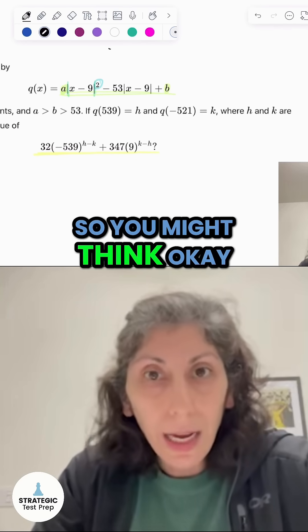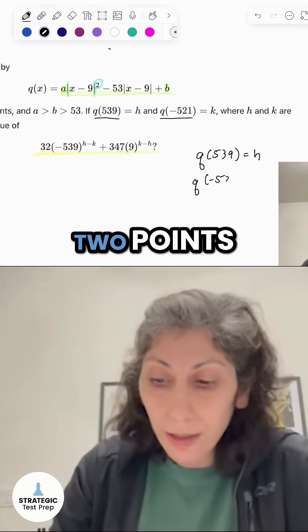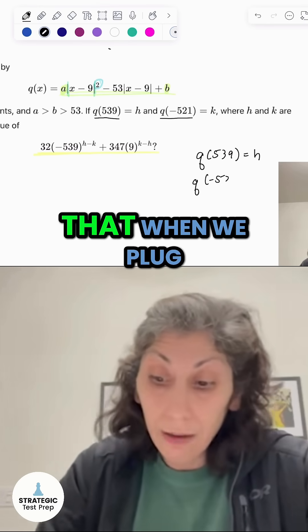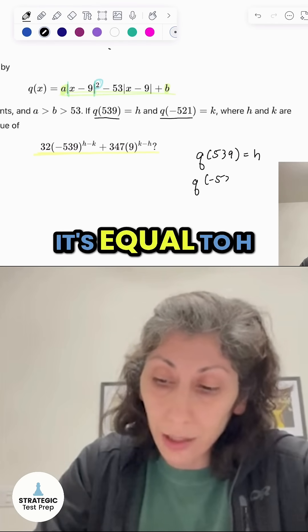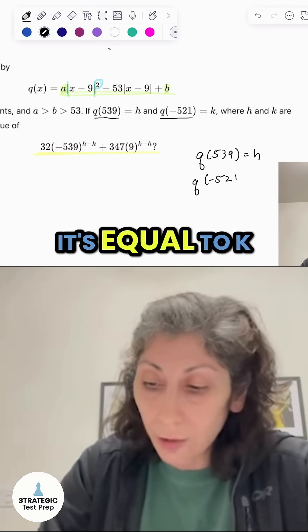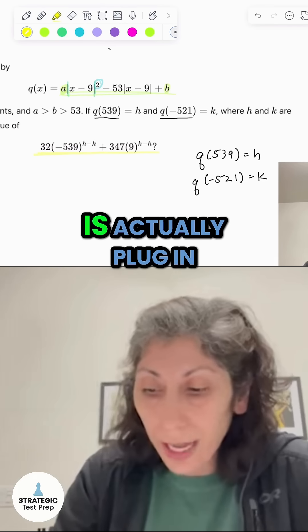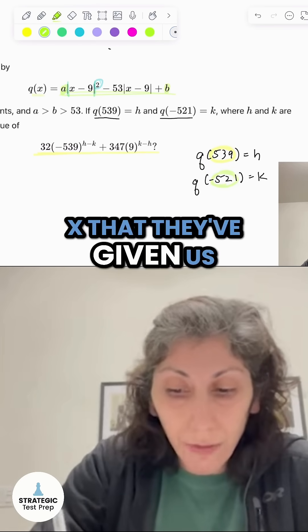So you might think, how do we get started? So first off, they've given us these two points and they've told us that when we plug in Q of 539, it's equal to H and when we plug in Q of negative 521, it's equal to K. So what we're going to go ahead and do is actually plug in these numbers into the Q of X that they've given us.